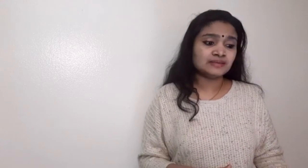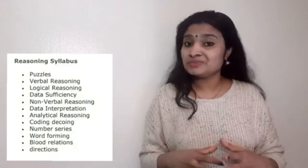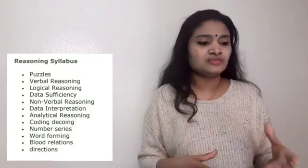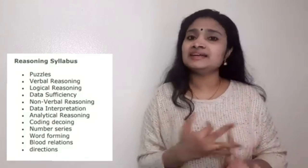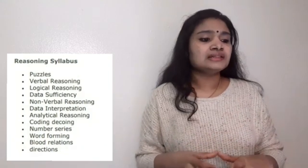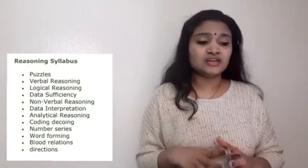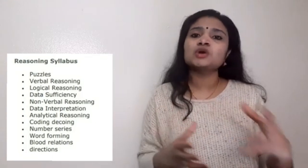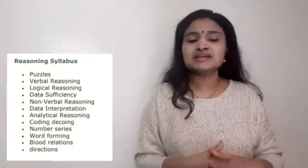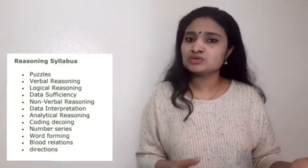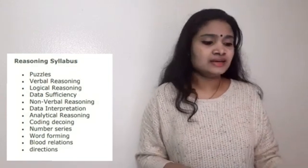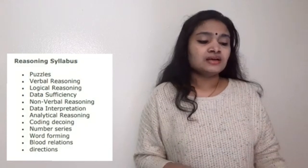From the generic area, the first topic is reasoning. The syllabus for reasoning includes puzzles — you are given certain puzzles and have to find the result or some missing stages. Then verbal reasoning, logical reasoning, data sufficiency, data interpretation, analytical reasoning, coding and decoding, number series, word forming, chord forming from given options, and blood relations and directions. These are the most important topics from reasoning.